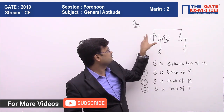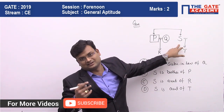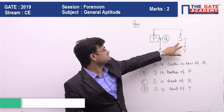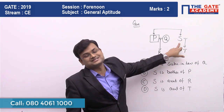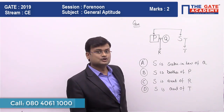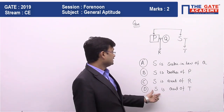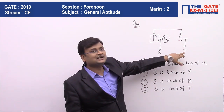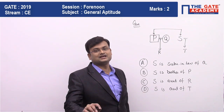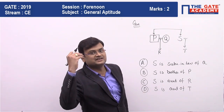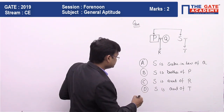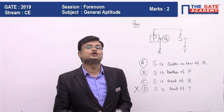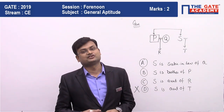For Statement 2, S is brother of P — again we do not know the gender of S, so we cannot say this is true or false. For Statement 3, S is aunt of R — again S can be male or female, so it can be true or false. But for Statement 4, S is aunt of T — S is actually the parent of T, either mother or father, so S cannot be the aunt of T. Therefore Statement 4 is definitely false. I hope this video was useful — please like and share with your friends.